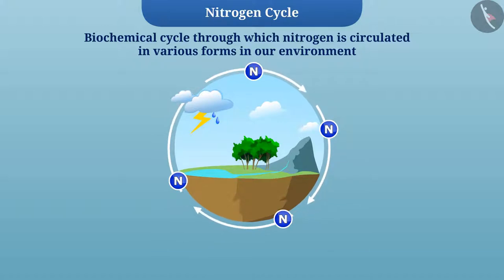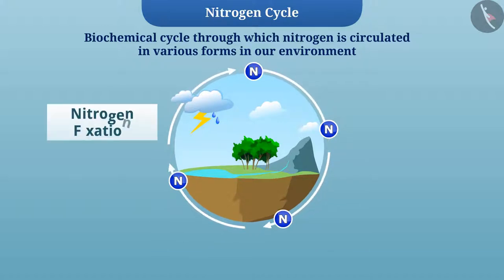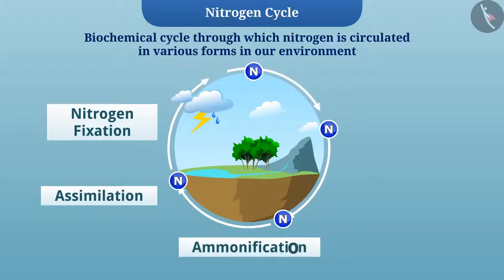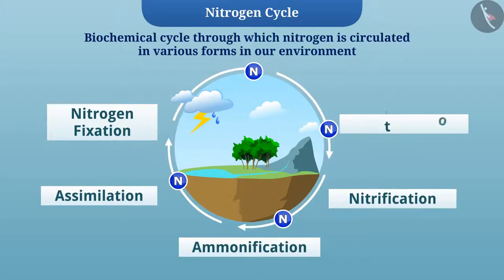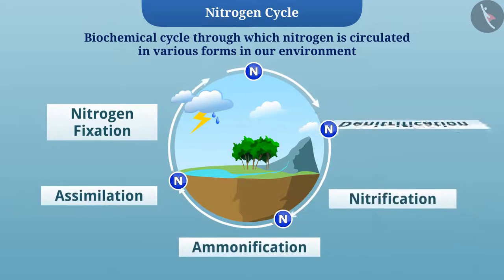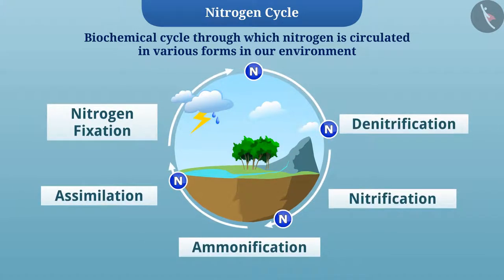This cycle has various stages such as nitrogen fixation, assimilation, ammonification, nitrification, and denitrification. Now let's understand the stages of the nitrogen cycle one by one.